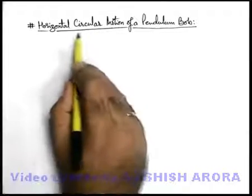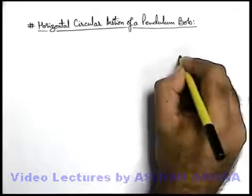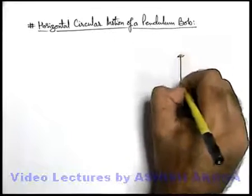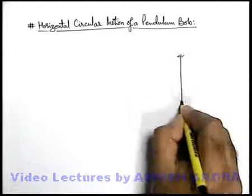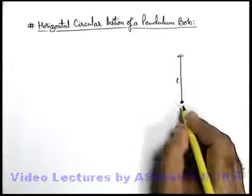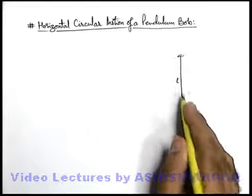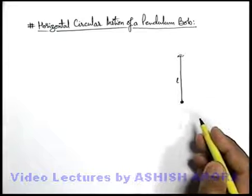Let us analyze the horizontal circular motion of a pendulum bob. I think all of you are aware about a simple pendulum, in which there is a bob of mass m, connected to a string of length l. Say the simple pendulum is hanging in the state of equilibrium at rest.